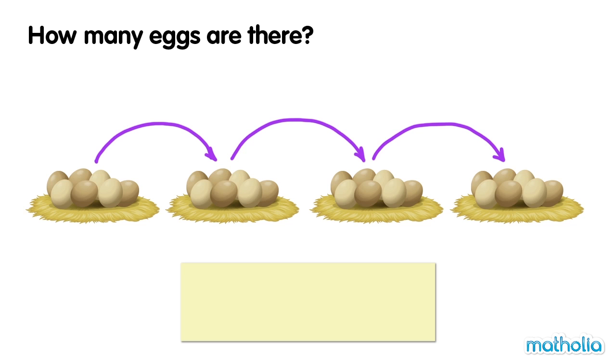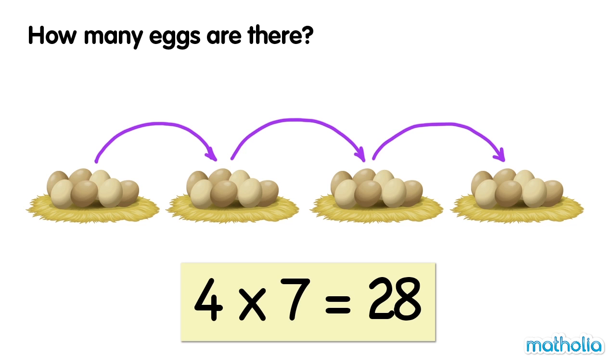Four sevens are twenty-eight. Four times seven equals twenty-eight.